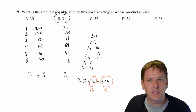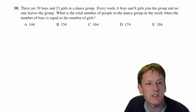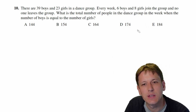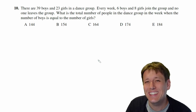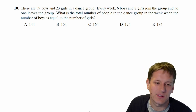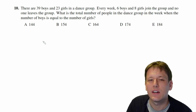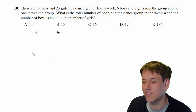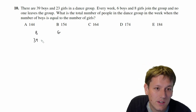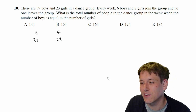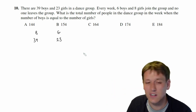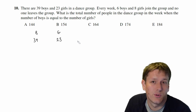In question 10, there are 39 boys and 23 girls in a dance group. Every week, six boys and eight girls join and no one leaves. What is the total number of people in the dance group in the week when the number of boys equals the number of girls? There's a very mathematical method, but because the numbers aren't enormous, a brute force approach works well and may even be faster.